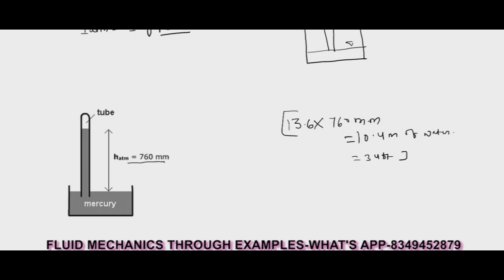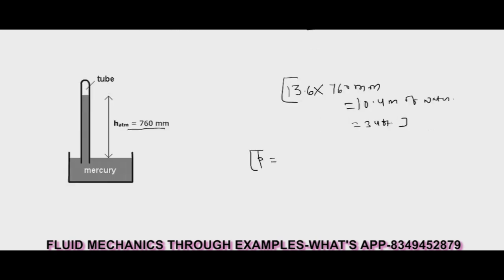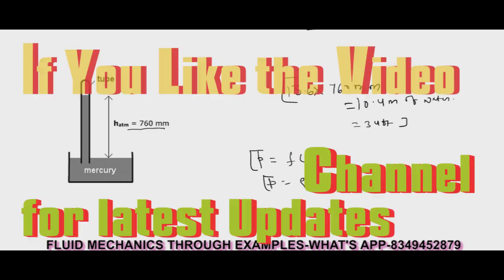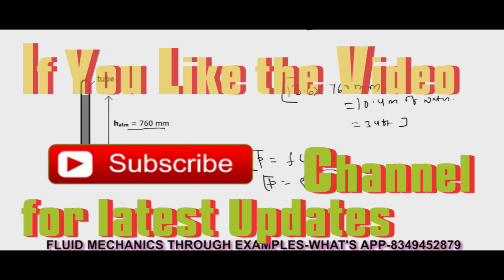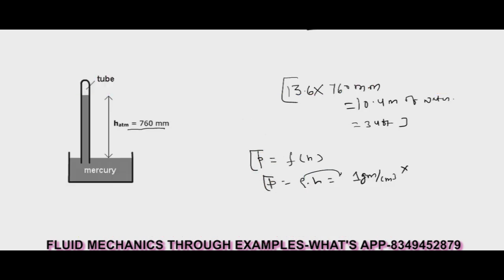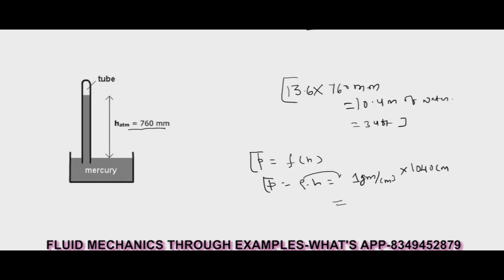But now we will verify this value by the law of hydrostatics. As we know by the law of hydrostatics, pressure is a function of H, or we can write it as P equals rho times H. If we say rho value is 1 gram per centimeter cube and H value is 1040 centimeters for this case, I am just converting 10.4 meters into centimeter value. Now if you calculate this value, it comes to 1.04 kg per centimeter square, or we can write it as 1 kg per centimeter square, and that's the value of 1 atmospheric pressure which I have already told you.